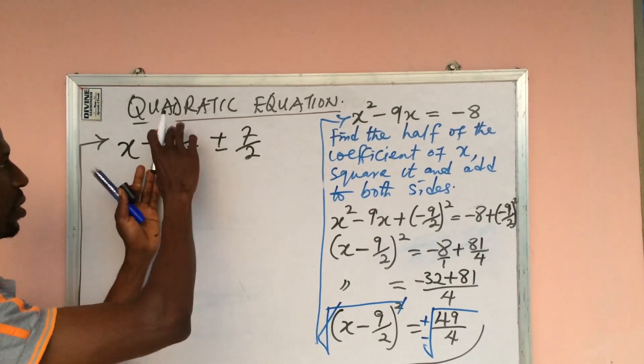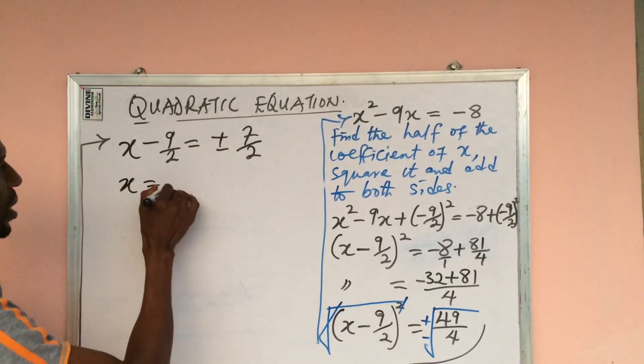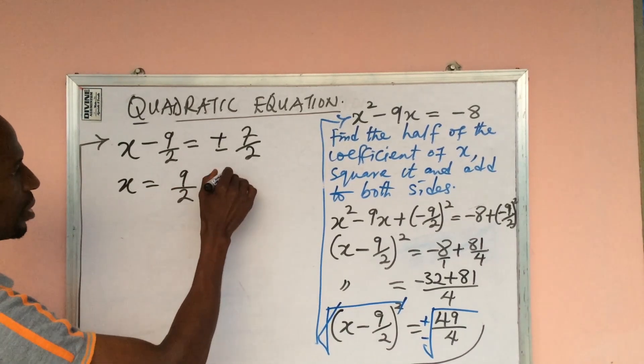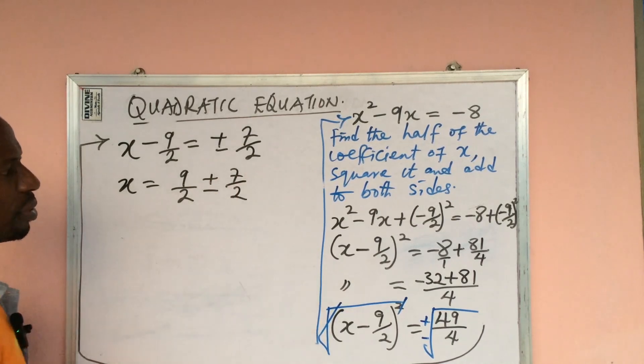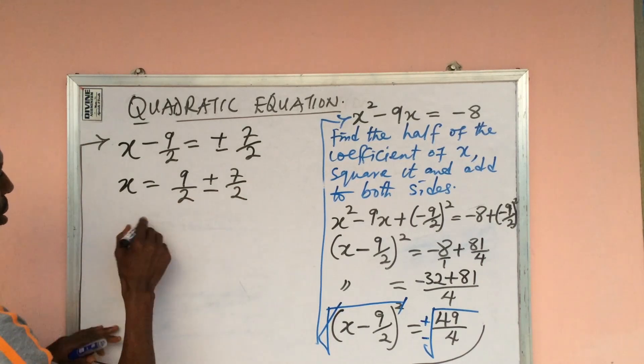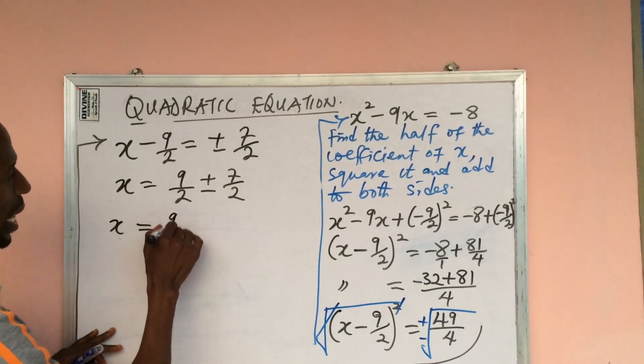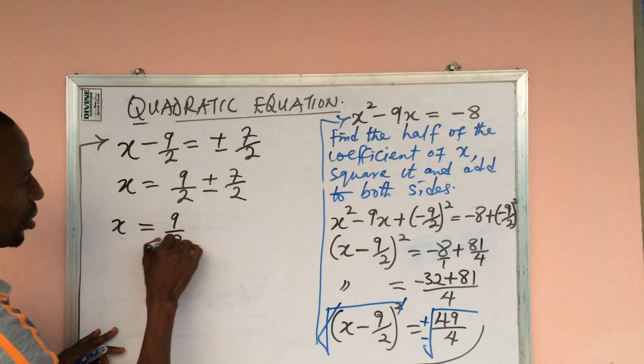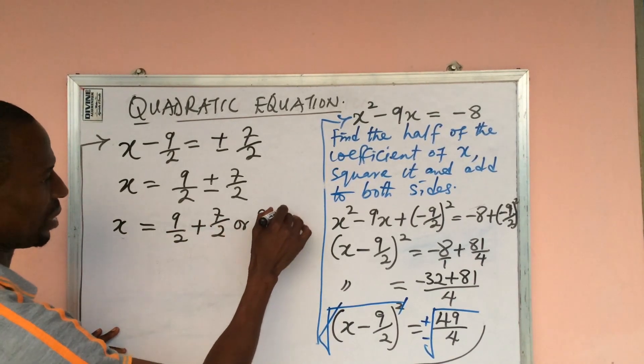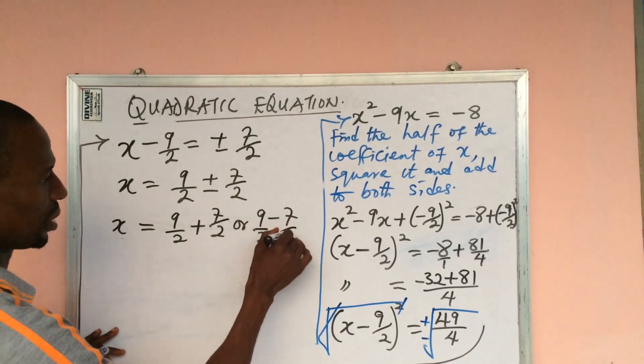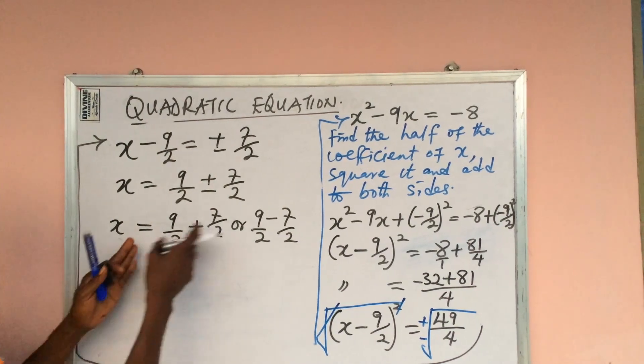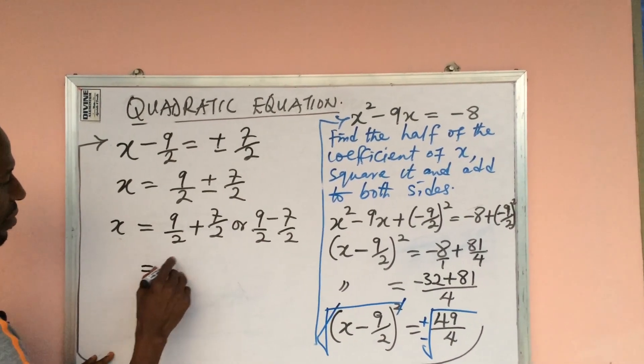We're looking for x, so we send this to the other side. This will now give us x = 9/2 ± 7/2. So we can split this: x = 9/2 + 7/2 or 9/2 - 7/2.